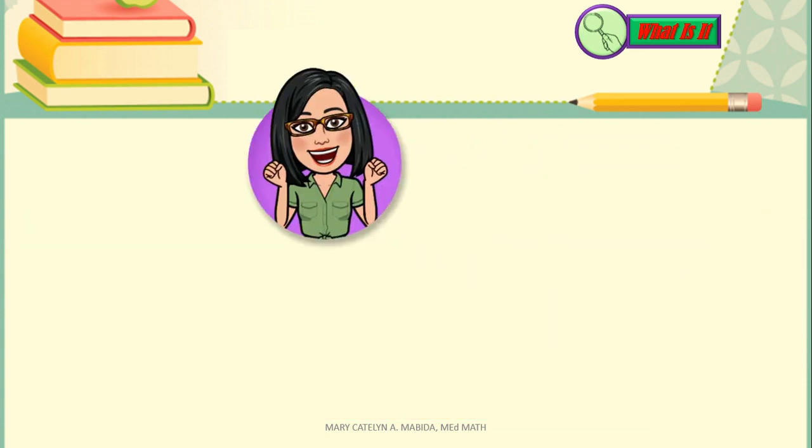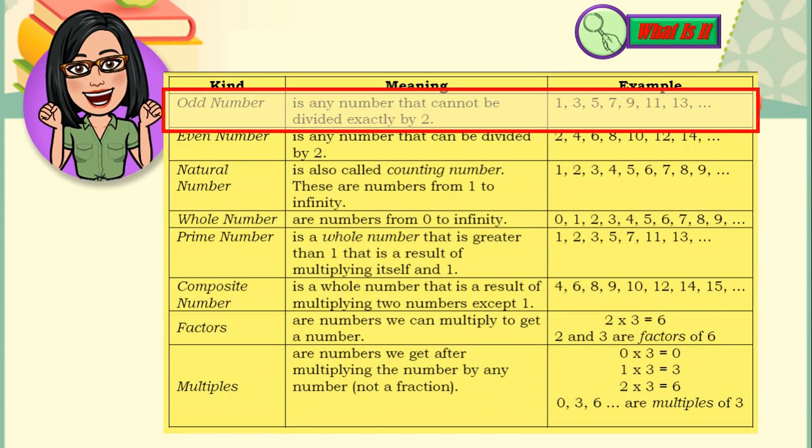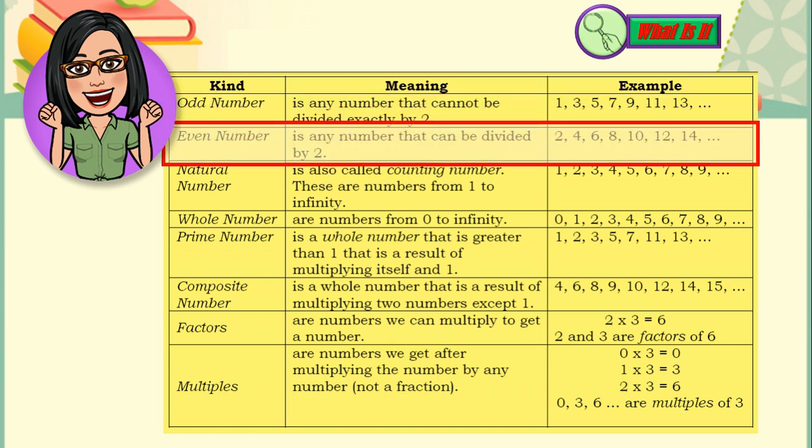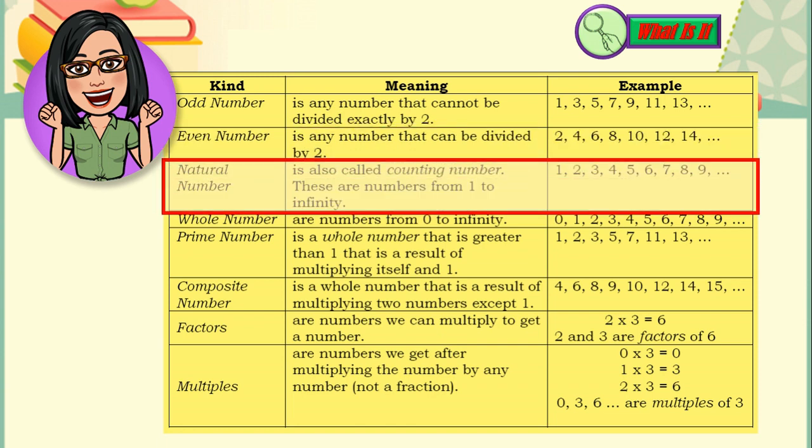So that it will be easier for you to describe the numbers using Set Builder notation, remember these kinds of numbers. An odd number is any number that cannot be divided exactly by 2. For example, 1, 3, 5, 7, 9, 11, 13, and so on. An even number is any number that can be divided by 2. For example, 2, 4, 6, 8, 10, 12, 14, and so on. A natural number is also called a counting number. These are numbers from 1 to infinity. For example, 1, 2, 3, 4, 5, 6, 7, 8, 9, and so on.